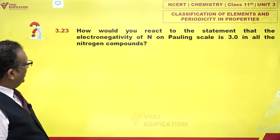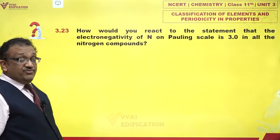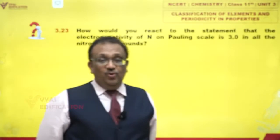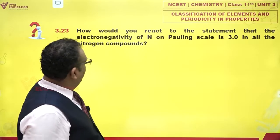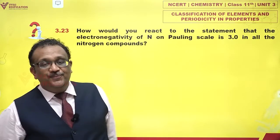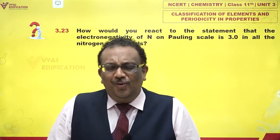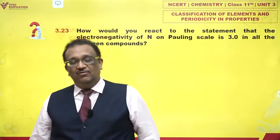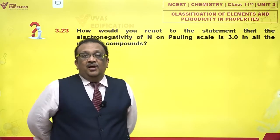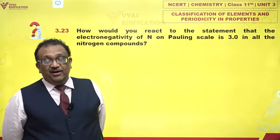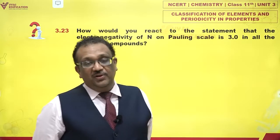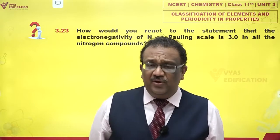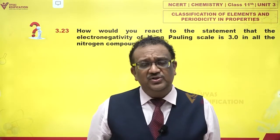How would you react to the statement that the electronegativity of nitrogen on Pauling scale is 3.0 in all the nitrogen compounds? Honestly, we will not react very kindly. We would say that that would be a very gross approximation. When Pauling declared that nitrogen's electronegativity would be around 3 on Pauling scale, it means that nitrogen is quite electronegative — that is okay.